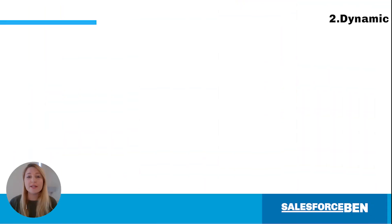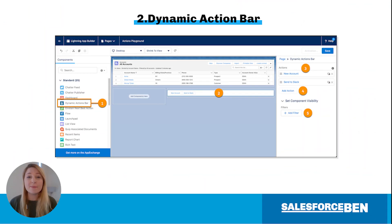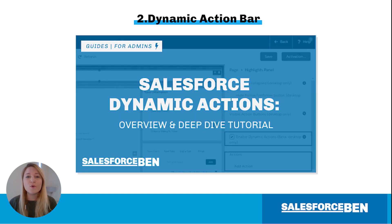There's an exciting update for dynamic actions in the Summer 21 release. You can now quickly and easily configure a dynamic actions bar for your standard and custom objects, and set the visibility for the entire bar instead of individual actions. For more guidance on dynamic actions, don't forget to check out the full guide on the Salesforce Ben blog.